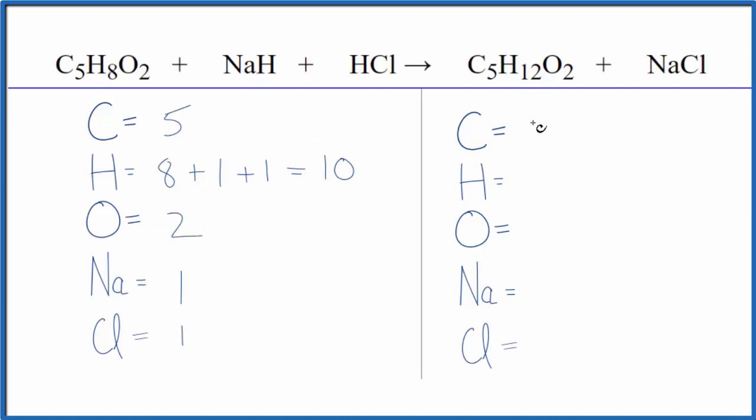On the product side we have five carbons, twelve hydrogens, two oxygens, and then one sodium and one chlorine.